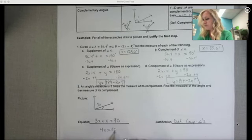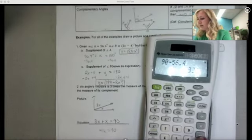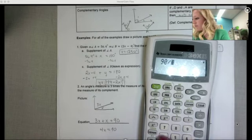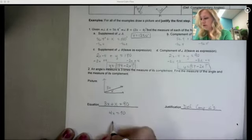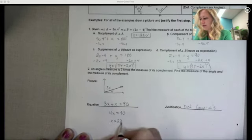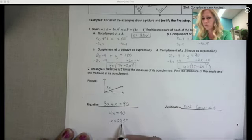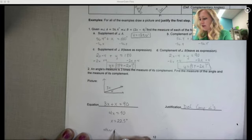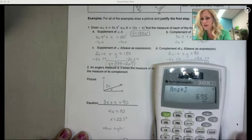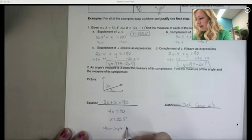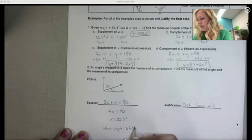So I can combine those x's. And so 90 divided by 4 is 22 and a half. So that means one of the angles is 22.5. The other angle is three times that. So we're going to multiply that times three and we get 67.5. And together they do add to be 90 degrees.